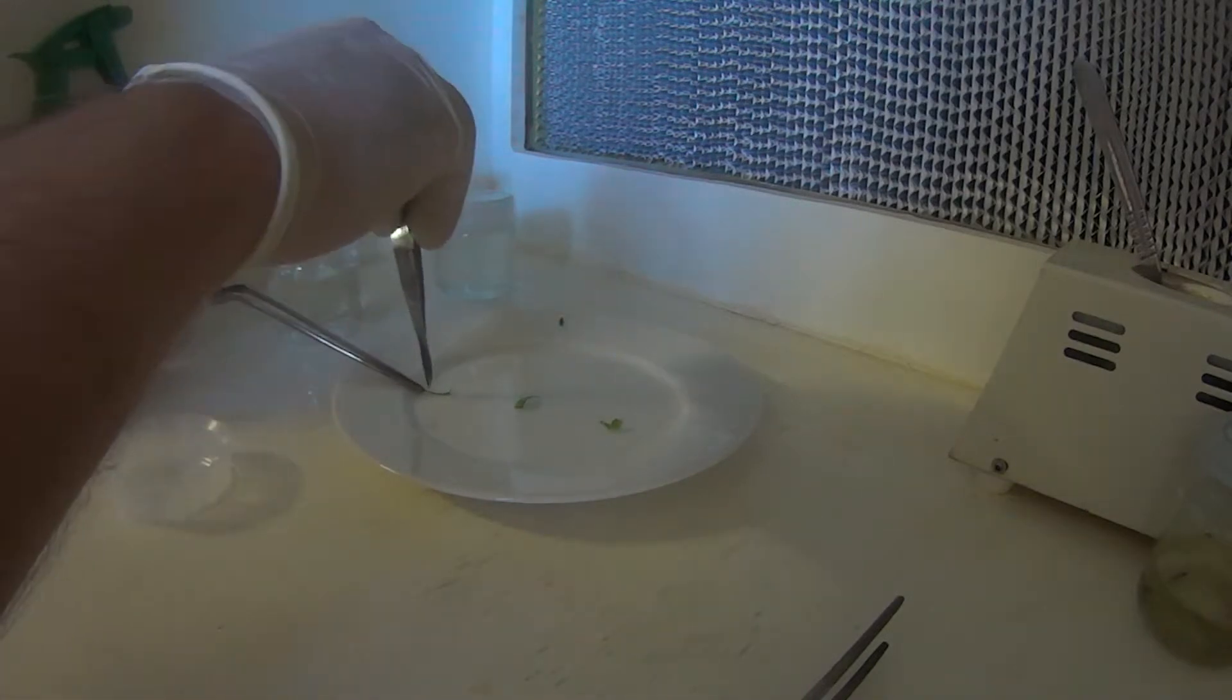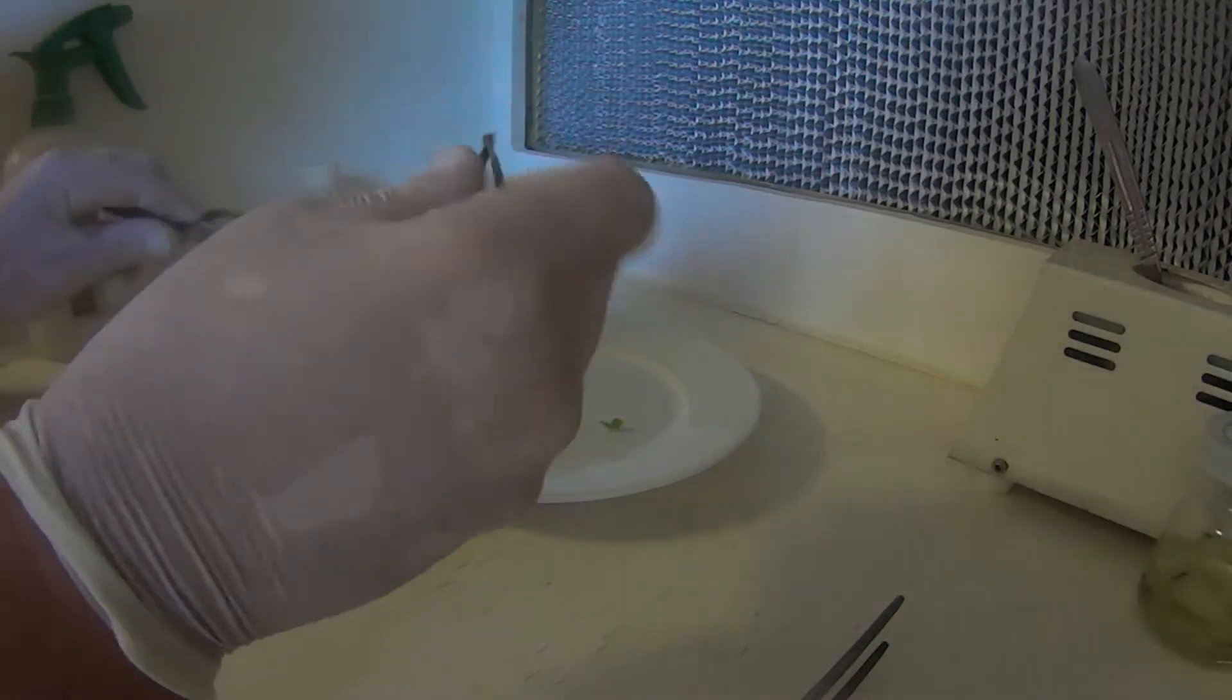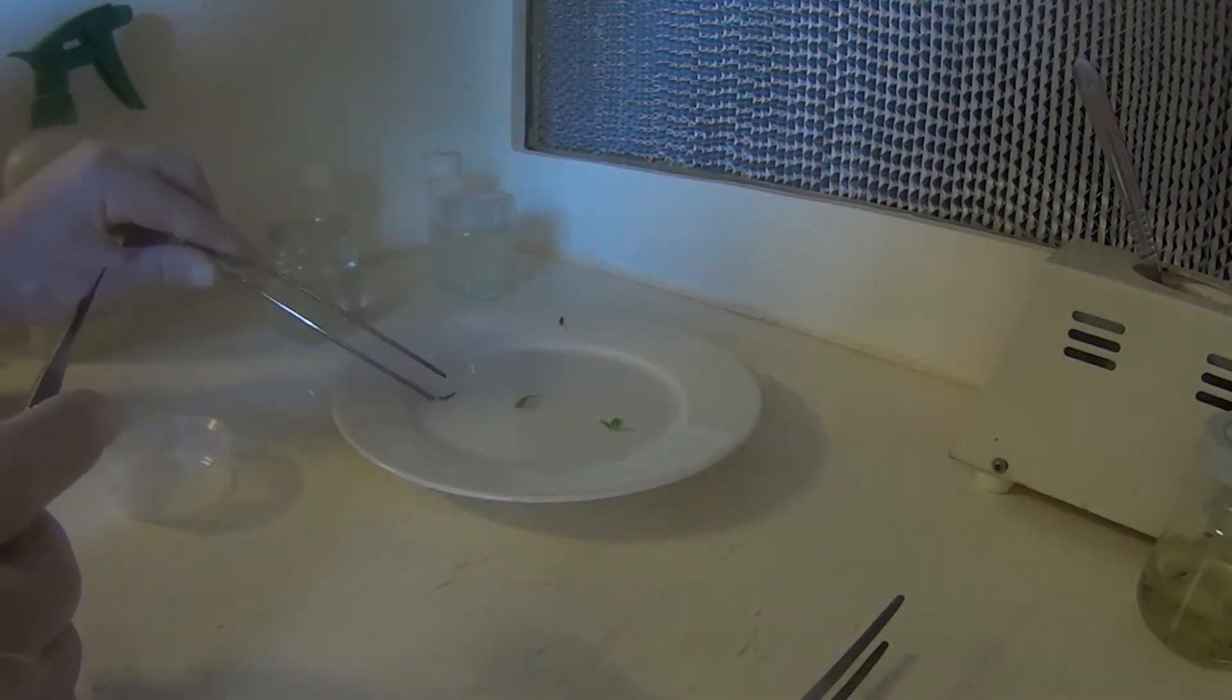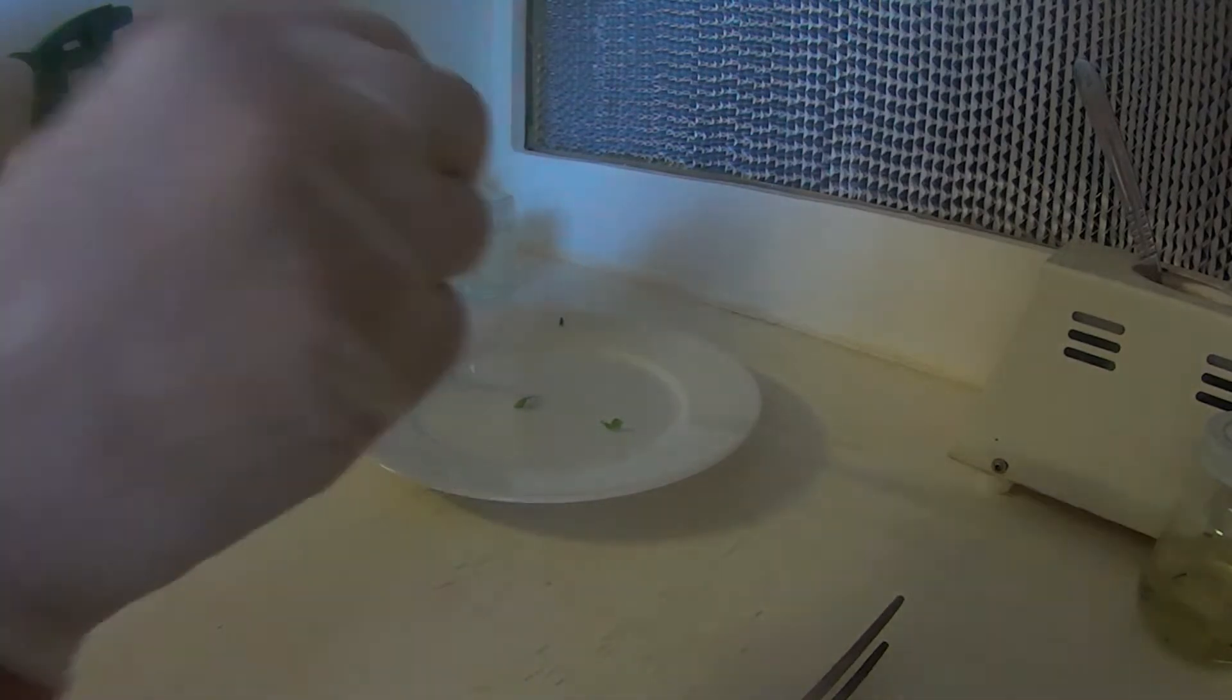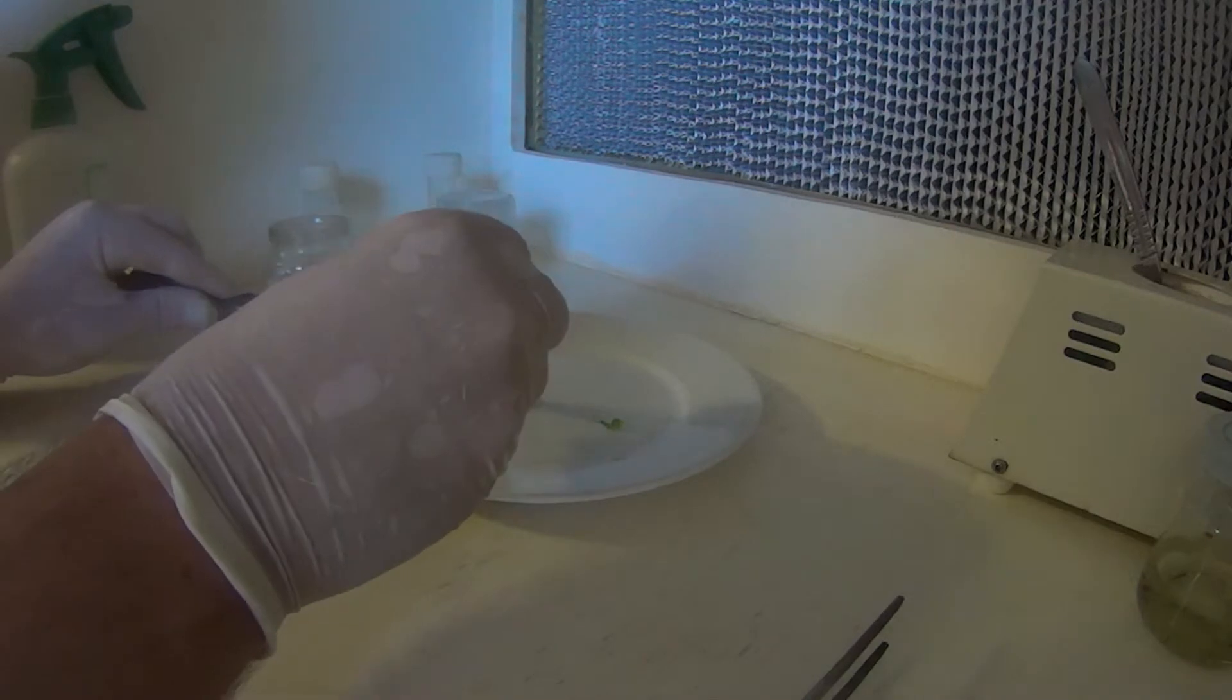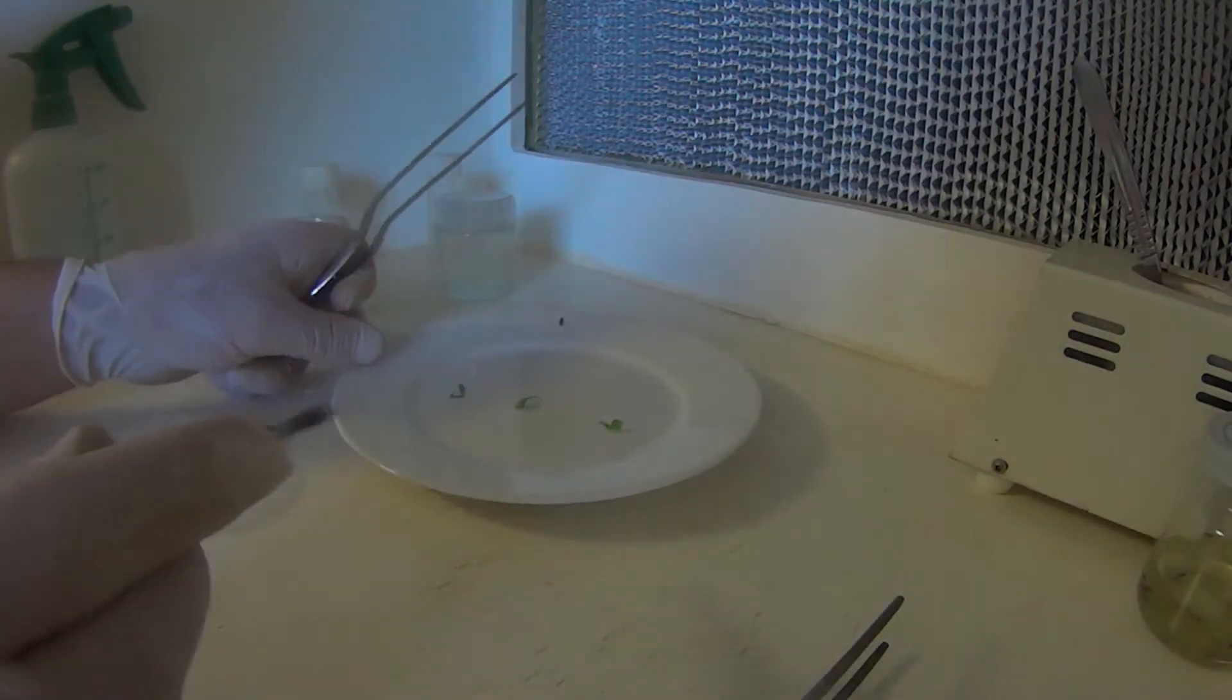Now all we need to do is, like we did with the other plant segments, just trim off the ends. Bleach tends to absorb into the ends, the cuttings of each segment. And the bottom. It's a bit hard to see.